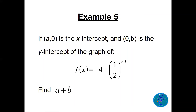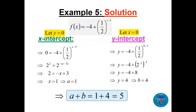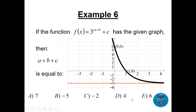If (a, 0) is the x-intercept and (0, b) is the y-intercept, find a + b. Set y = 0 to find the x-intercept: solving gives x = 1, so a = 1. For the y-intercept, set x = 0: evaluating gives y = 4, so b = 4. Therefore a + b = 5.